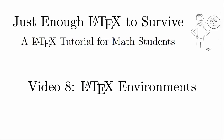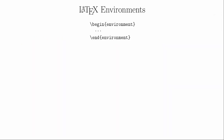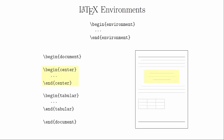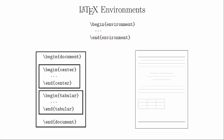A LaTeX environment is a wrapper around a certain part of your code that defines how the contents of that code should behave. Every time you see \begin and \end, you are looking at an environment. For example, text inside of a center environment will be centered in the output document, and information inside of a tabular environment produces a table. Technically, the document itself is an environment. The \begin command for an environment loads code that defines its behavior. The \end command tells LaTeX that you're done with the environment — you need to make sure you create a nested structure so that all of your environments are ended in the order in which you created them.